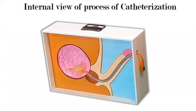This model gives a clear mid-sagittal view of the urinary bladder and male urethra. Transparency of the urethral tube allows viewers to see the exact location of the tip and balloon of the catheter, while the hemispherical hollow of the bladder accommodates the inflated balloon.